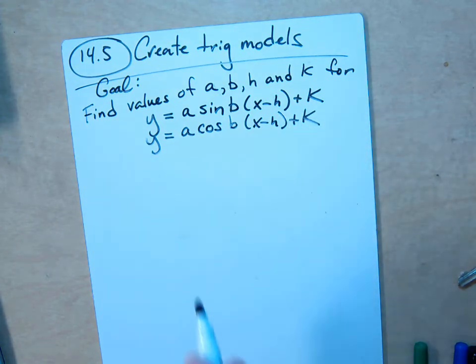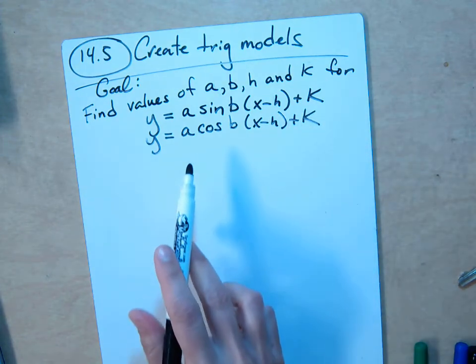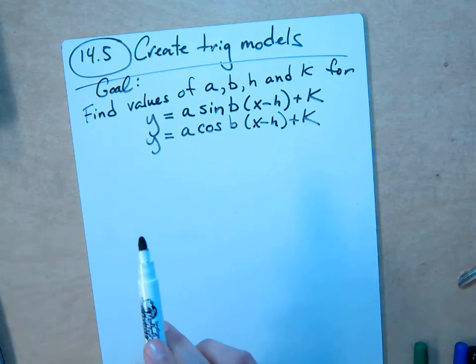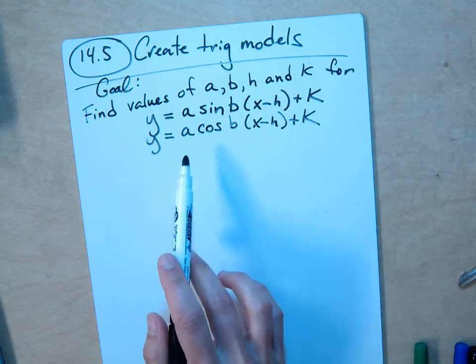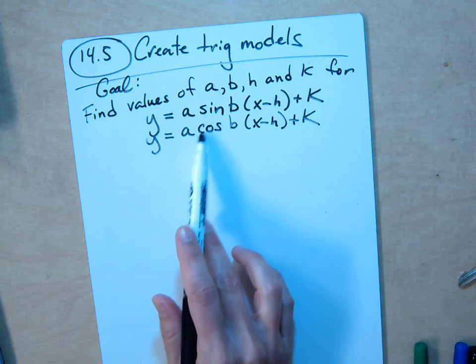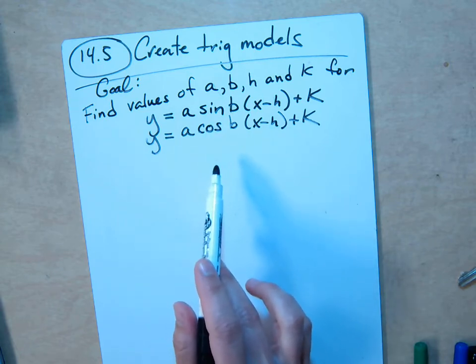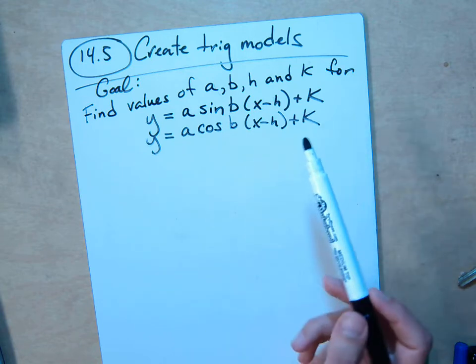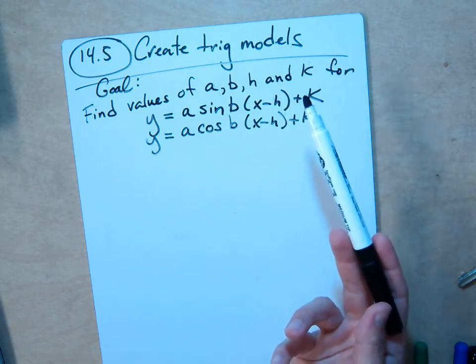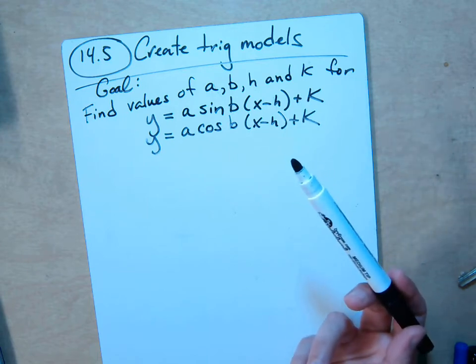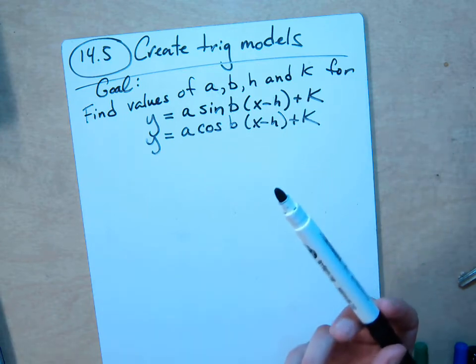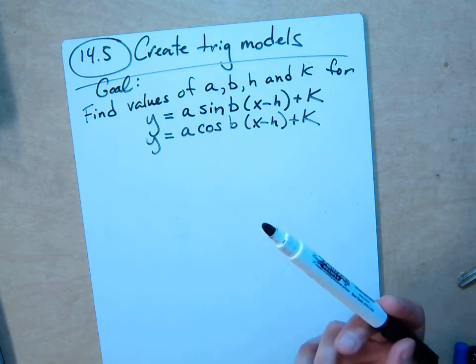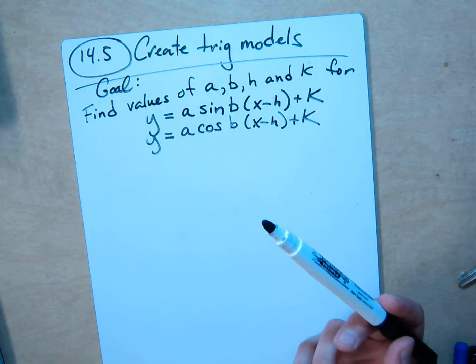You've seen this before. Previously I may have used capital letters for a and b, and now I'm using lowercase because that's what the book does, but it's the same thing. And we have to ask ourselves, how do we choose whether to model with sine or cosine? And the answer is you can model anything with either because they're the same, there's just a little phase shift between the two, but otherwise they take on the same values.